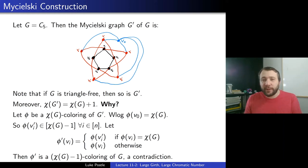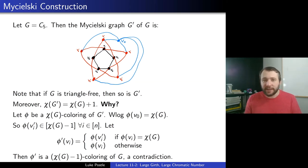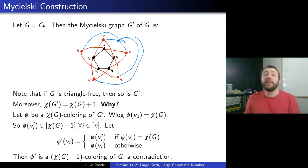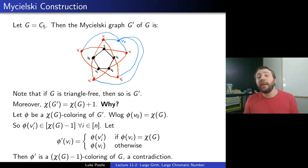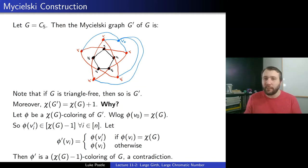That's the proof for the Michelski graph — it's a nice construction. There are other constructions by Tutt and Zikov for creating arbitrarily large chromatic number. For the Michelski construction, you just iterate: start with C5, get a new graph where χ becomes four, repeat and χ becomes five, and so on. It always stays triangle-free, and you get arbitrarily large chromatic number.